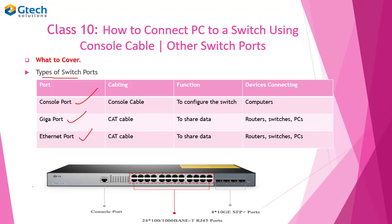Under the console port, we use a console cable. We use a console cable to connect our PC to a switch. The function of a console port is that it enables us to configure the switch. We just connect that console cable to a switch and obtain the switch interface from our computer and configure from that point. The only device connecting to the console port is our computer, which we use to configure the switch.